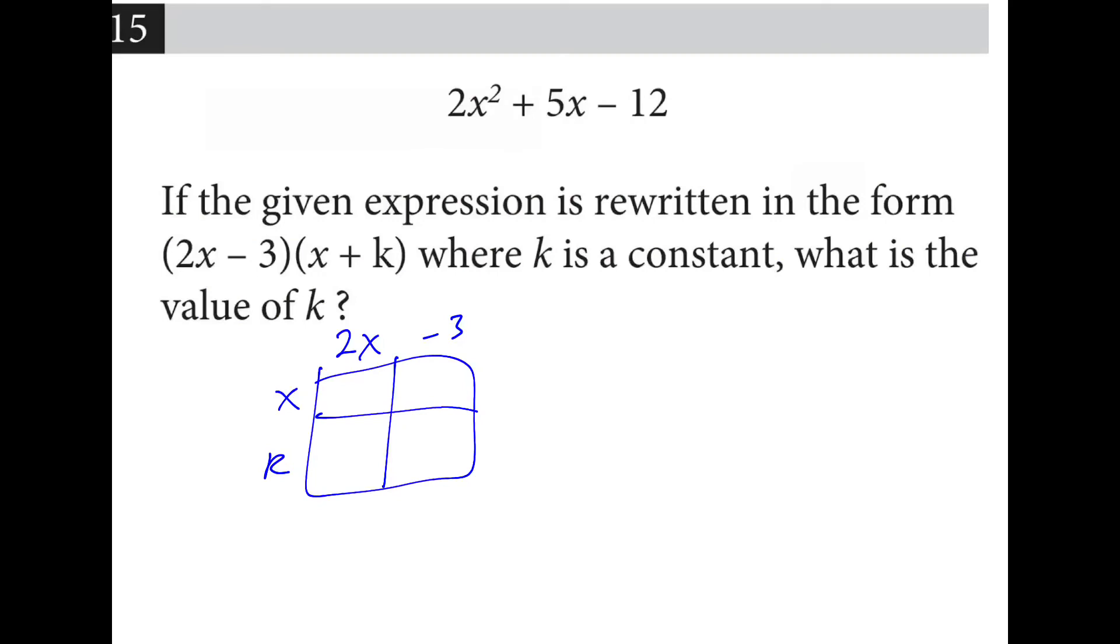So if I set up my box method here, I get 2x squared minus 3x, 2kx, and then what is negative 3 times k? How do I get to this? Only when k is 4 would I get negative 12. And here that would make this 8x, which gives me everything I need. So k is equal to 4.